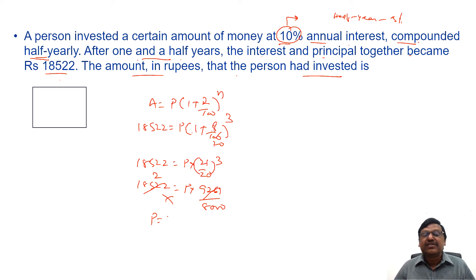So principle is 16,000. Simple straightforward formula based question.